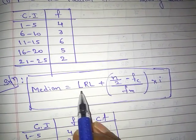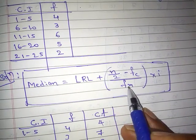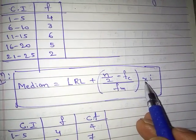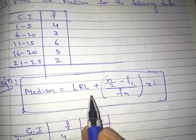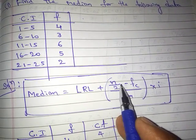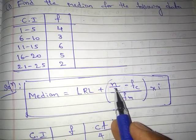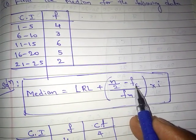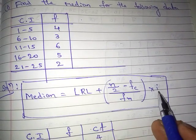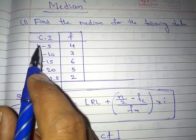The formula for median is: Median = L + (n/2 − fc) / fm × i. Where L means lower limit, n/2 means half of the total sum of frequencies, fc means cumulative frequency before the median class, fm means the frequency of the median class, and i means the class interval width.